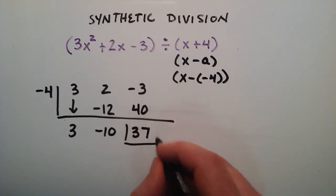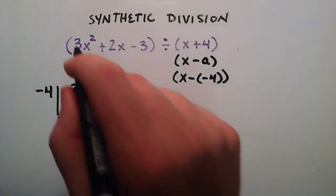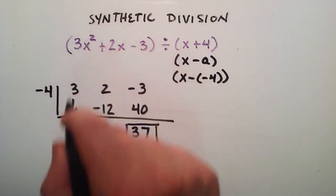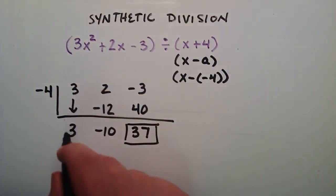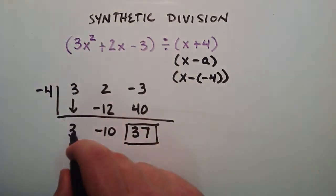So this is going to be our remainder term. You notice it's not 0 this time. We started with a second degree polynomial here. And this is going to be the coefficient of the degree minus 1. So 2 minus 1 is 1. So this is going to be 3 times x to the 1 or just simply x.